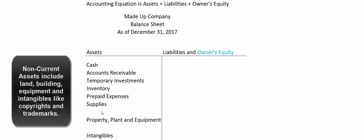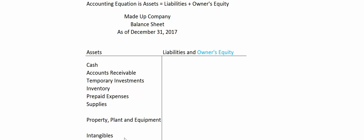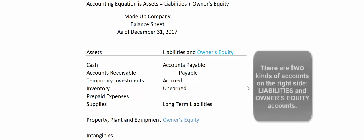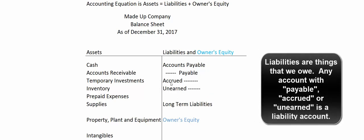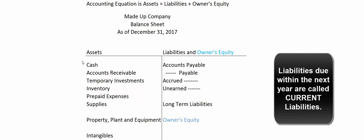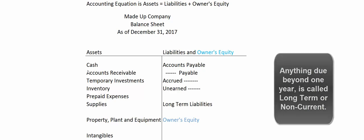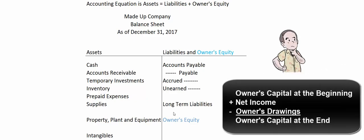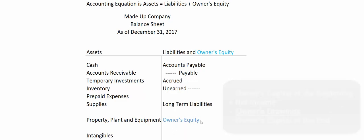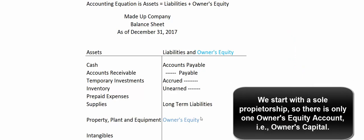All things that are cash or will be cash within a year are called current assets. Things like land, building, and equipment that last longer than a year are called non-current assets. We also have intangibles — things like copyrights and trademarks that don't have physical substance but are certainly assets. On the right side of the balance sheet are two kinds of accounts: liabilities — things we owe — where any account with the word payable, accrued, or unearned is a liability account. Amounts due within the next year are current liabilities; amounts due beyond a year are long-term liabilities. The difference between what we own and what we owe is our equity. Owner's capital at the beginning plus net income minus owner's drawings equals owner's capital at the end.